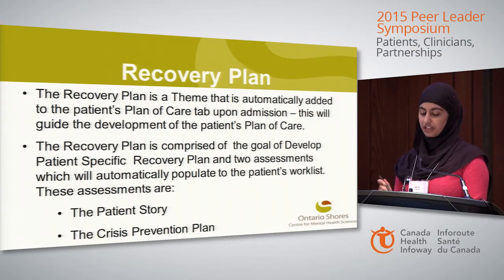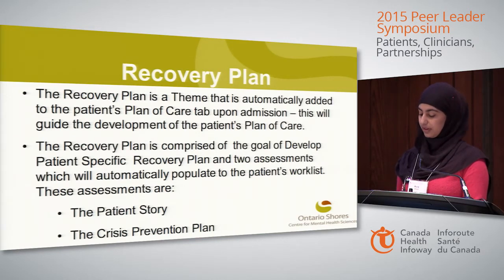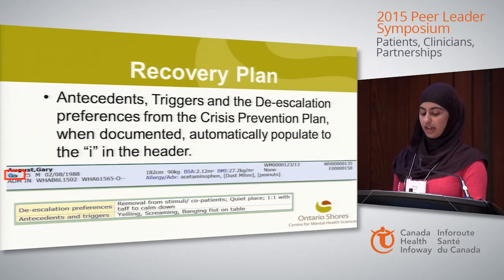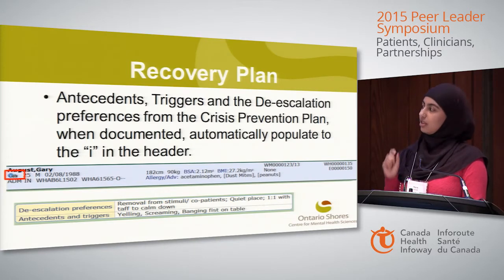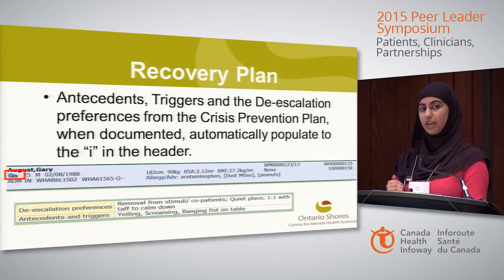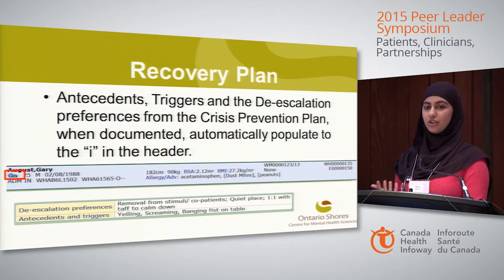The second intervention is a crisis prevention plan, a tool to help patients and clinicians identify what to do during a crisis. Questions include antecedents and triggers, de-escalation preferences, early warning signs, and therapeutic interventions. Because we have an integrated electronic health record, the antecedents, triggers, and de-escalation preferences from the crisis prevention plan pull into the patient header, displaying alongside the patient picture, making it easier for clinicians to find that information quickly when required.